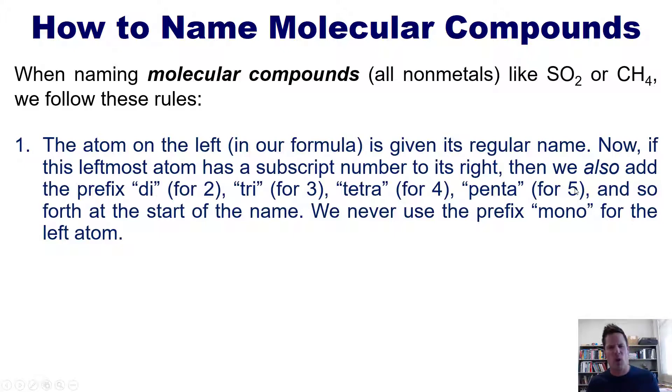If you have a formula such as these formulas right up here that have an implied one next to the leftmost atom, in this case a sulfur or in this case a carbon, you do not use mono ever to indicate one in a molecular compound name. You never use mono for the first element.